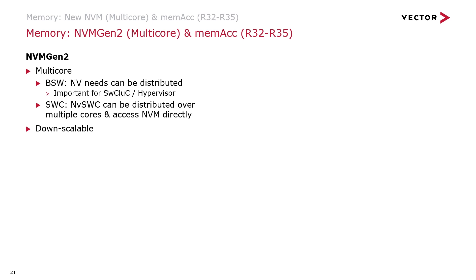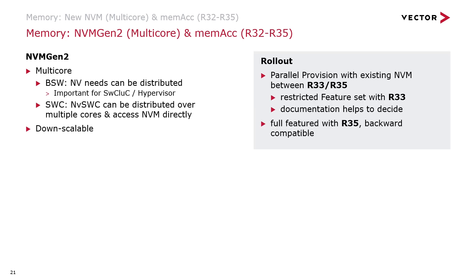Supporting load balancing through multi-core distribution is also the number one motivation for our new NVM Gen2 architecture, which is particularly beneficial for SWC and hypervisor use cases. A central instance of NVM connects itself to NVM satellites on separate cores, which can handle memory access via the central master. SWCs on any core can now directly address their NV needs to a local satellite. A further goal of the new architecture is down-scalability, which is highly beneficial for use cases like the bootloader.